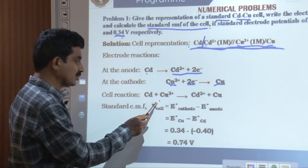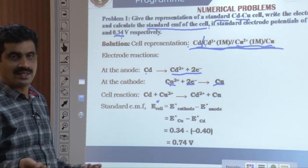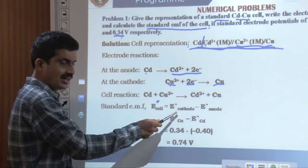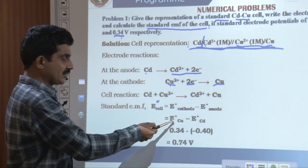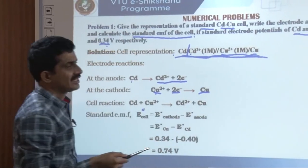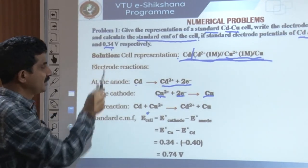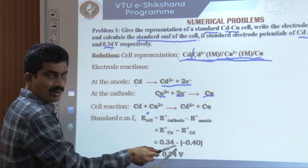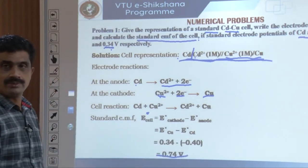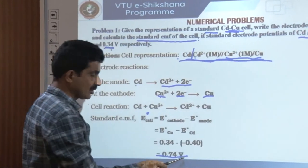To calculate the standard EMF: E naught cell = E naught cathode minus E naught anode = E naught Cu minus E naught Cd = 0.34 minus (minus 0.4) volt. So 0.34 minus 0.4 gives... the standard EMF of the cadmium-copper cell is minus 0.74 volt.